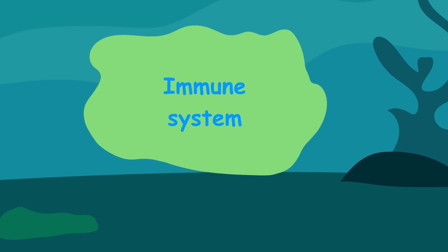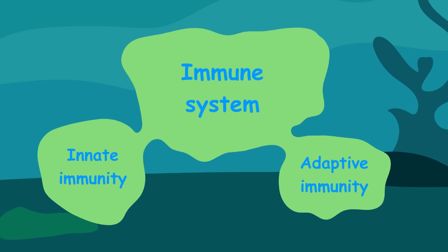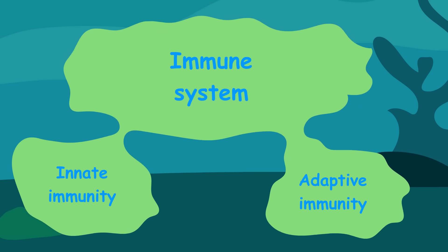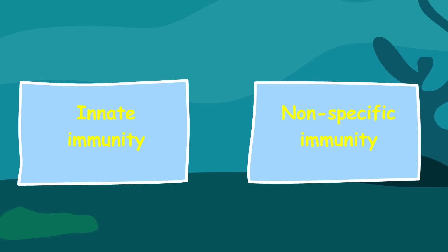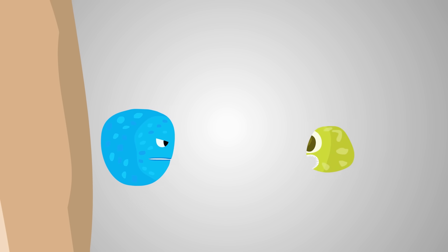The immune system can be broadly divided into two parts, innate and adaptive immunity. Innate immunity, or nonspecific immunity, is the body's first natural defense to any intruder.